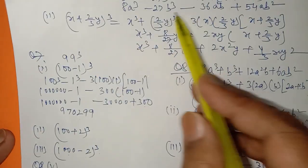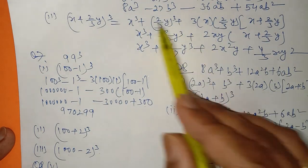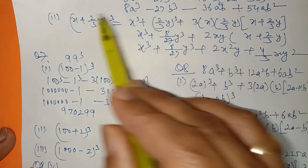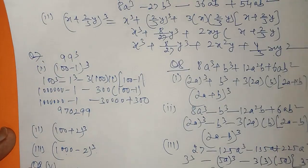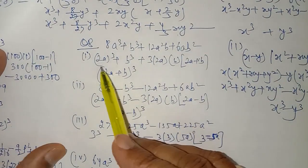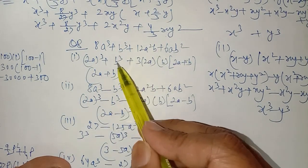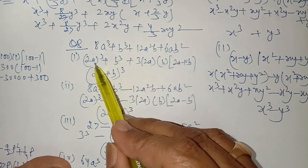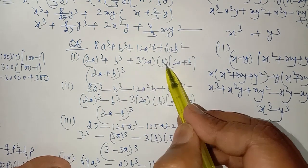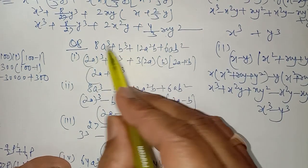Now in question number 8, the right-hand side of the whole cube is given, just like in question number 5 where the right-hand side of the whole square was given and we had to write the left side. Here, in the first part, we can see this is 2a whole cube and this is b whole cube. So which identity applies? It is a cube plus b cube.